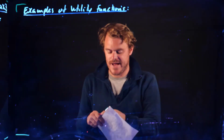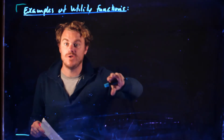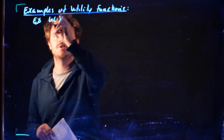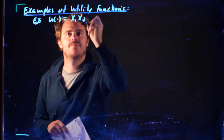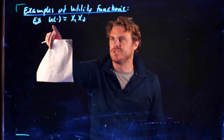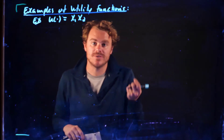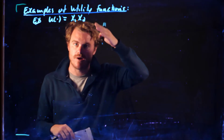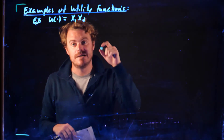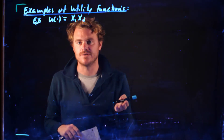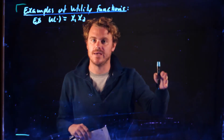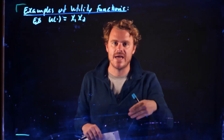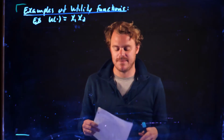Before moving on, I want to remind ourselves that the utility function u(x1, x2) = x1 times x2 is not a unique representation. We could take any monotonic transformation of this, and that would just be a different way of labeling those exact same indifference curves. All that matters is the order, because we're looking at ordinal utility.